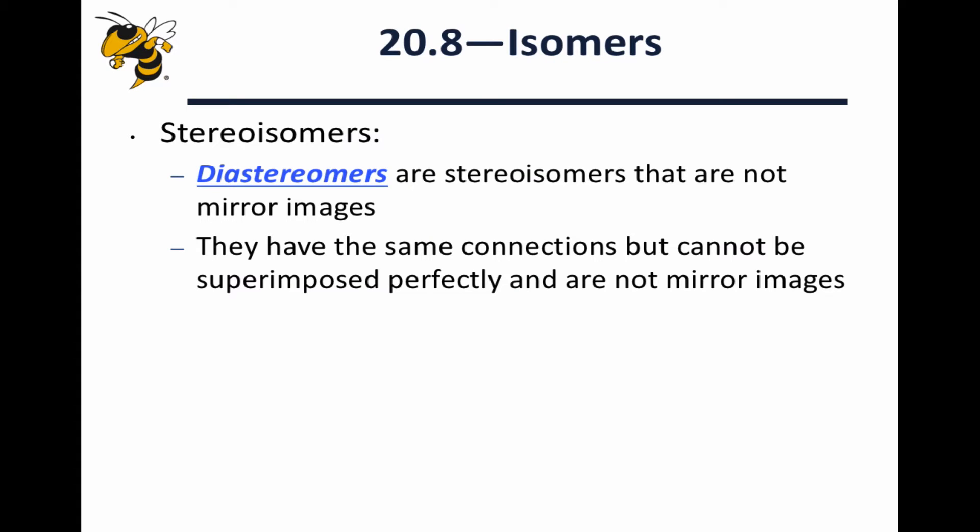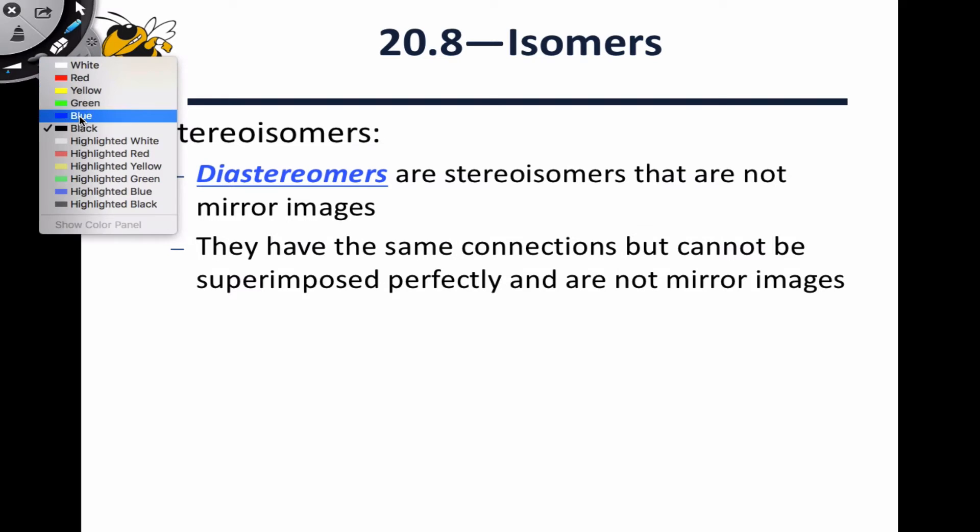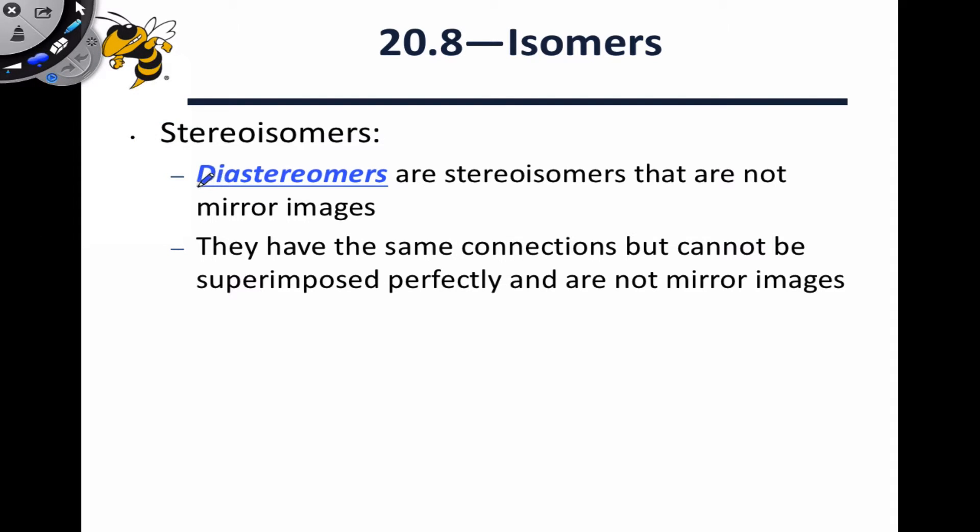In this video we're going to discuss stereoisomers and specifically diastereomers. Recall that stereoisomers are isomers that have the same connections — that is, the same constitution — but different three-dimensional positions of the atoms in space, different configuration. The broadest class of stereoisomers are called diastereomers.